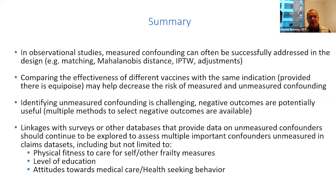In summary, in observational studies, measured confounding can often be successfully addressed in the design through matching, Mahalanobis distance, inverse probability of treatment weighting, and adjustments. However, comparing the effectiveness of different vaccines with the same indication—provided there is equipoise—may help decrease the risk of both measured and unmeasured confounding. Identifying unmeasured confounding is very challenging. Negative outcomes are potentially useful, but there are multiple other methods. There are also linkages with surveys or other databases, which we used in the herpes zoster study, providing data on unmeasured confounders—physical fitness, frailty measures, level of education, attitudes towards medical care, and health-seeking behaviors.